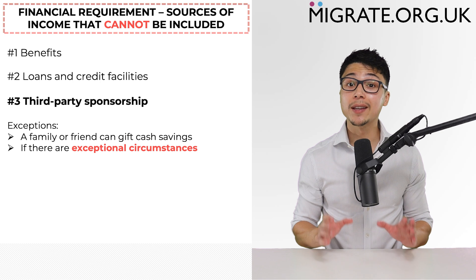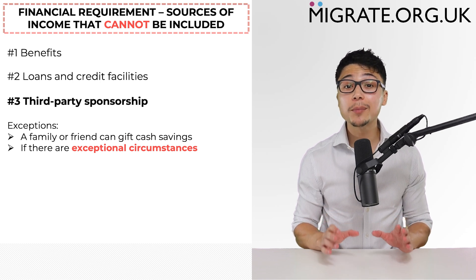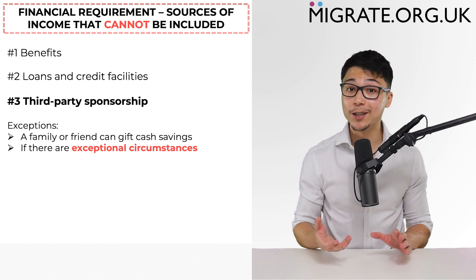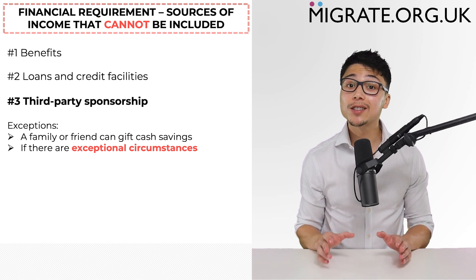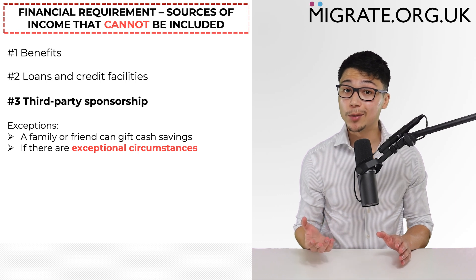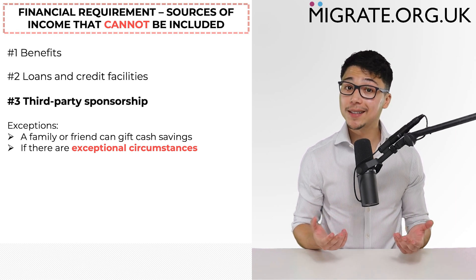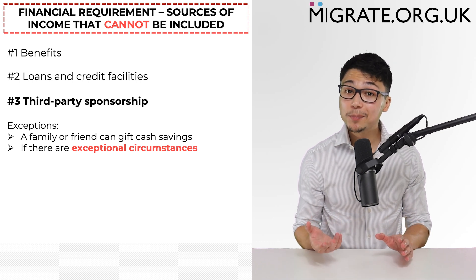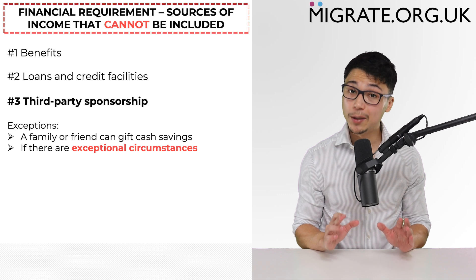An exception to the rule that there cannot be third-party sponsorship will apply if there are exceptional circumstances which could render refusal of the application a breach of Article 8, because it could result in unjustifiably harsh consequences for the applicant, sponsor, or a relevant child. It must be stressed, however, that this is an incredibly high threshold and it is most commonly the case that this very high threshold will not be met.